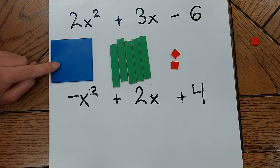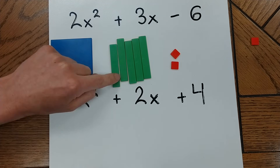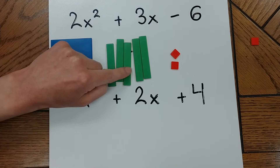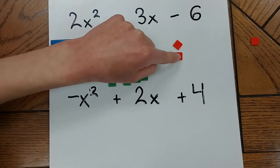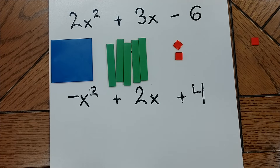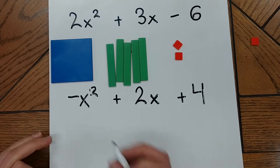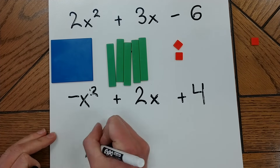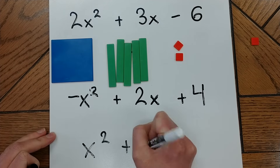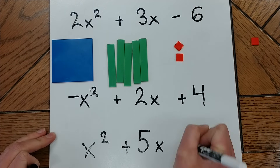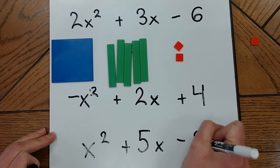Eventually this leaves me with one positive x squared tile, five positive x tiles, and two negative unit tiles, giving me a final answer of x squared plus 5x minus 2.